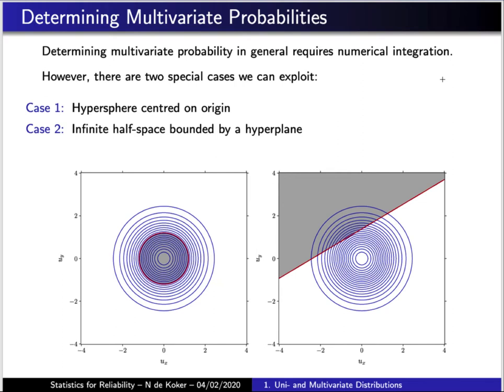One is a hypersphere, which is centered on the origin. So in the two-dimensional case, a hypersphere is a circle. So what we're interested in on the left here is what is the probability of a point falling inside this red circle.